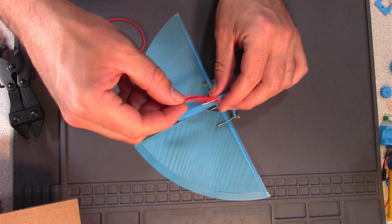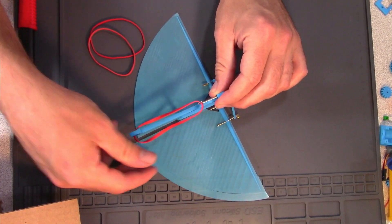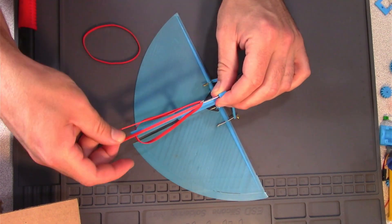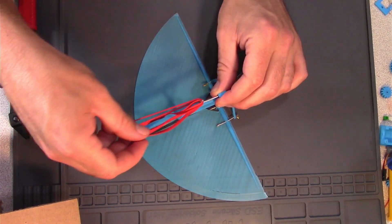I used rubber bands to power the ornithopter. I'll put on multiple rubber bands to increase the tension, giving it more power.